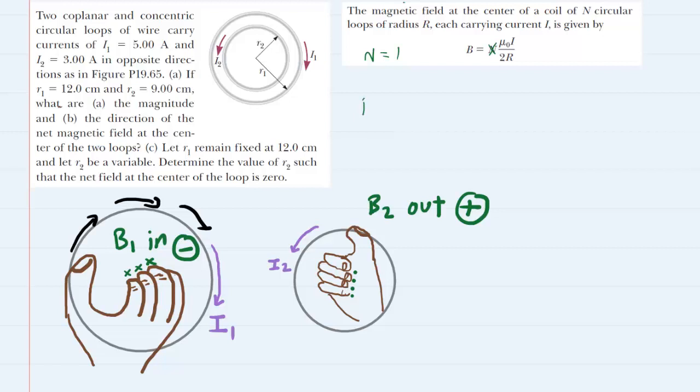Let's calculate B1 by taking that constant mu naught, multiplying it by current I1, and then dividing it by 2 times the radius of wire 1. Here is the setup. The value of mu naught is written right here. The current I1 was given as 5 amps and the radius of the first larger loop r1 was 12 centimeters, however we had to convert that into meters so we multiplied the 12 by 10 to the negative 2.